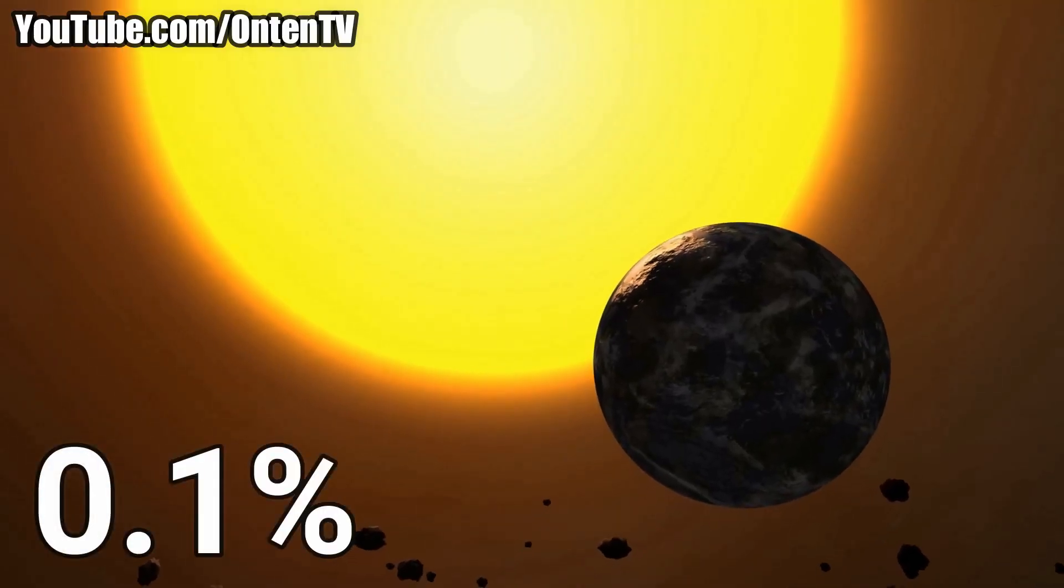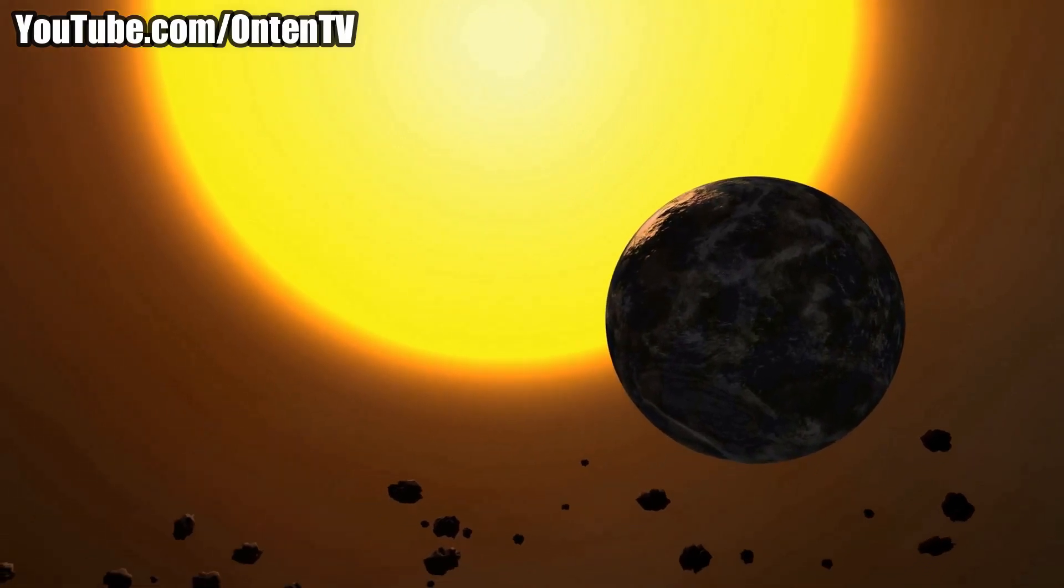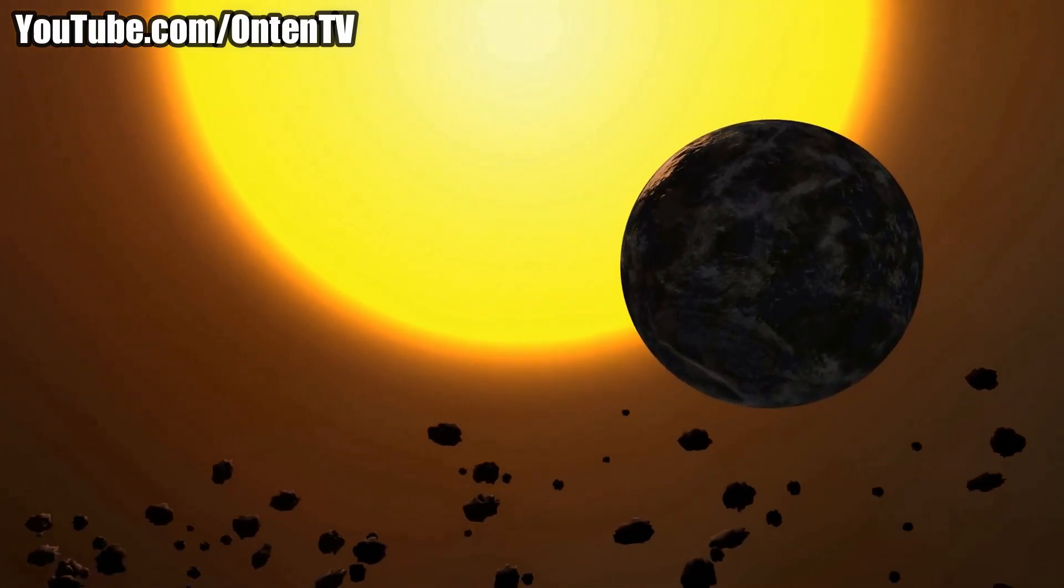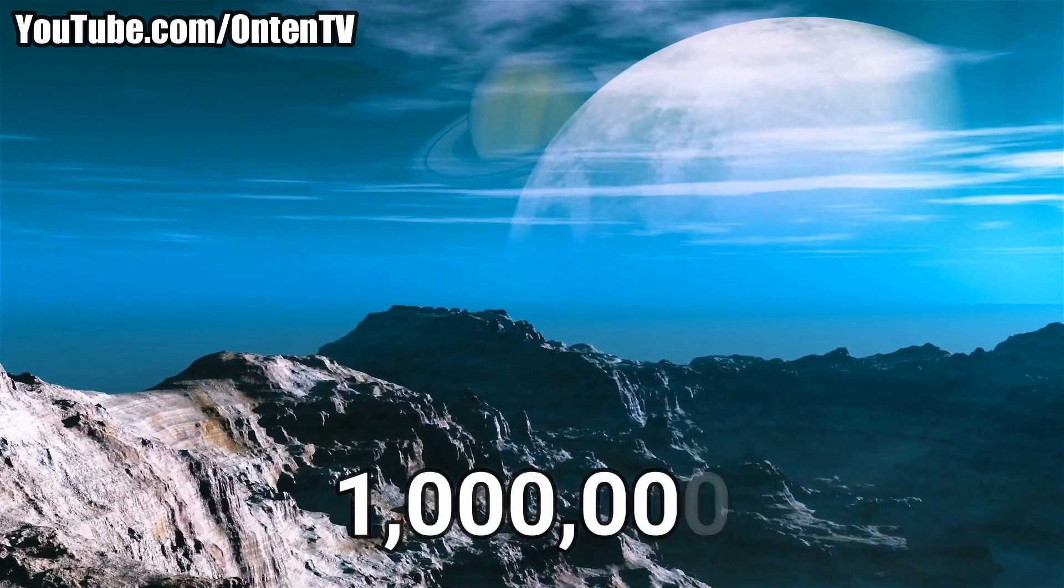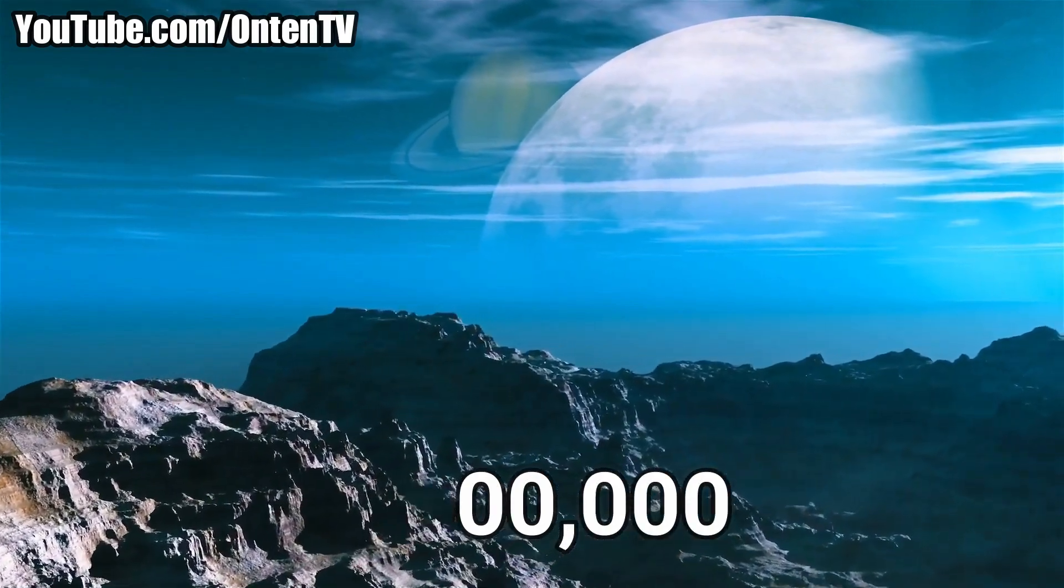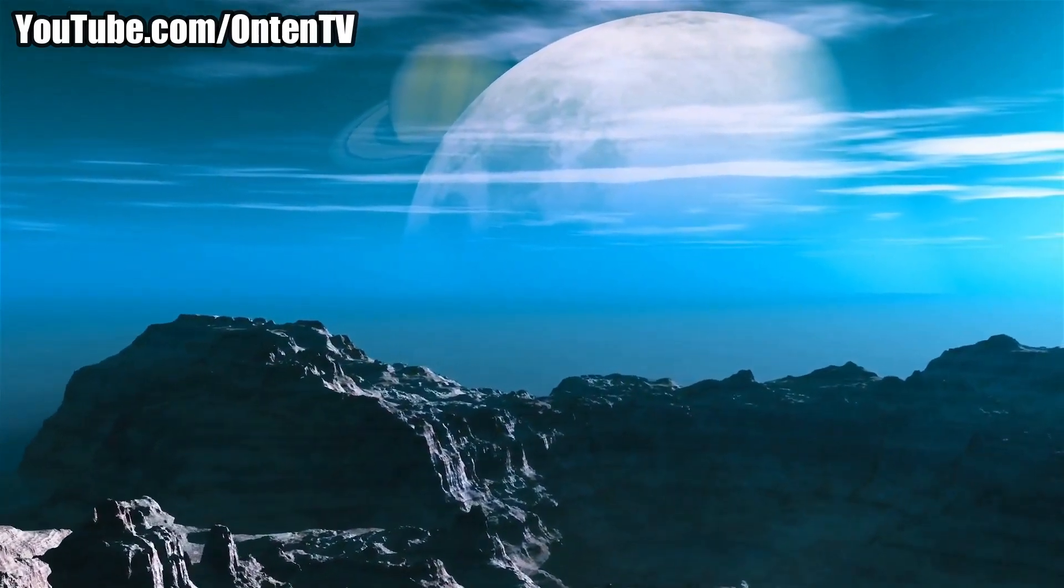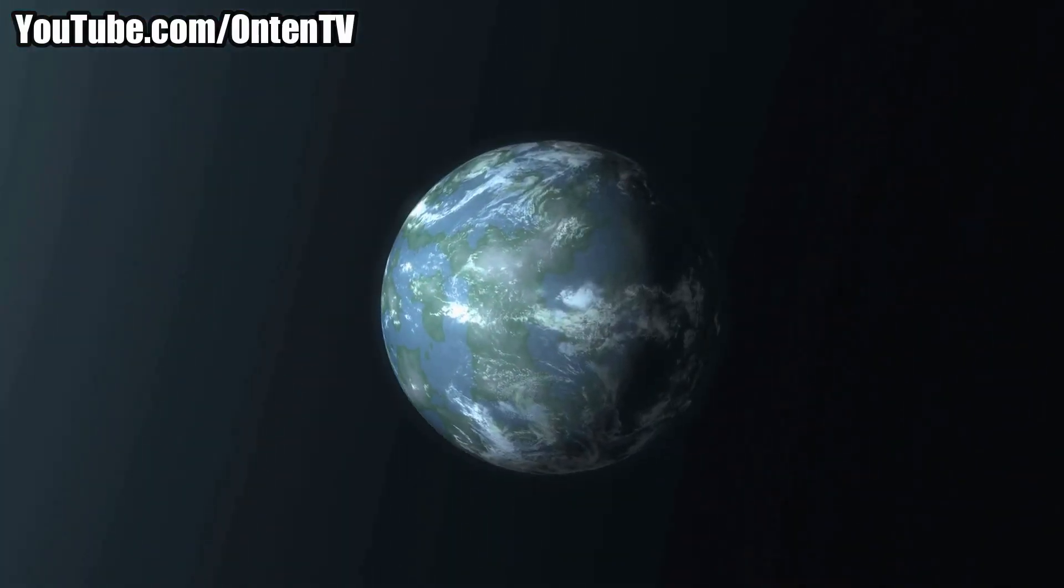So if 0.1% of these planets that are in the Goldilocks zone have life, that equals one million planets. So there is a slight chance that one million planets have life, and this is just planets in the Milky Way.